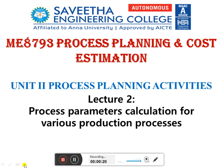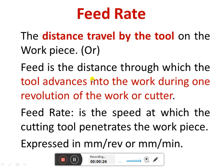Feed rate is the distance traveled by the tool on the workpiece — how much distance is traveled by the tool. It is the distance through which the tool advances into the work during one revolution of the work or cutter. It is normally expressed in millimeters per revolution or mm per minute.